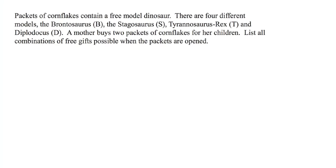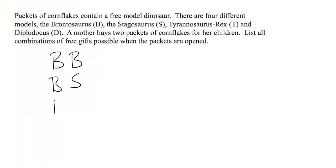Cornflakes contain a free model dinosaur. There are four different models: the brontosaurus, the stegosaurus, the tyrannosaurus rex, and the diplodocus. A mother buys two packets of cornflakes for her children. List all combinations of free gift possible when the packets are opened. This has to be treated a little differently because we could have a repetition — if we had a brontosaurus in the first packet, we could absolutely have a brontosaurus again in the second. So if we get brontosaurus first, we could have brontosaurus again, stegosaurus, or all four — these are all the possibilities for brontosaurus in the first packet.